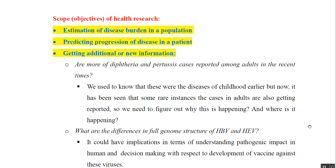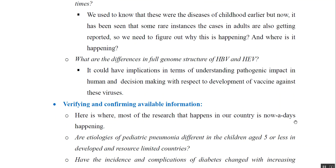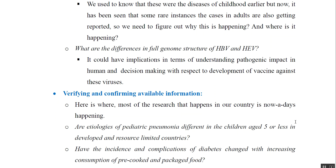Another example of new information is examining differences in the full genome structure of HBV and HEV, which could have implications for understanding pathogenesis and decision-making regarding vaccine development against both viruses. The third objective is verifying or confirming available information — sometimes we have information but want to confirm it. For example, are etiologies of pediatric pneumonia different in children aged 5 or less in developed versus resource-limited countries? Also, have the incidence and complications of diabetes changed with increasing consumption of precooked or packaged food? This is the kind of research happening in our country nowadays.